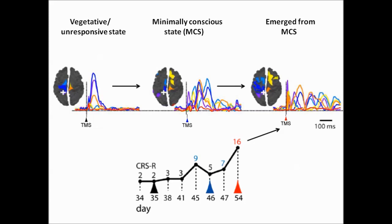And finally, when the patient recovered the ability to communicate on day 54, TMS triggered again responses that were differentiated and were spreading across the brain. In conclusion, patients who gradually recovered consciousness revealed a clear-cut change in effective connectivity that occurred at an early stage, even before reliable communication is established at the bedside.